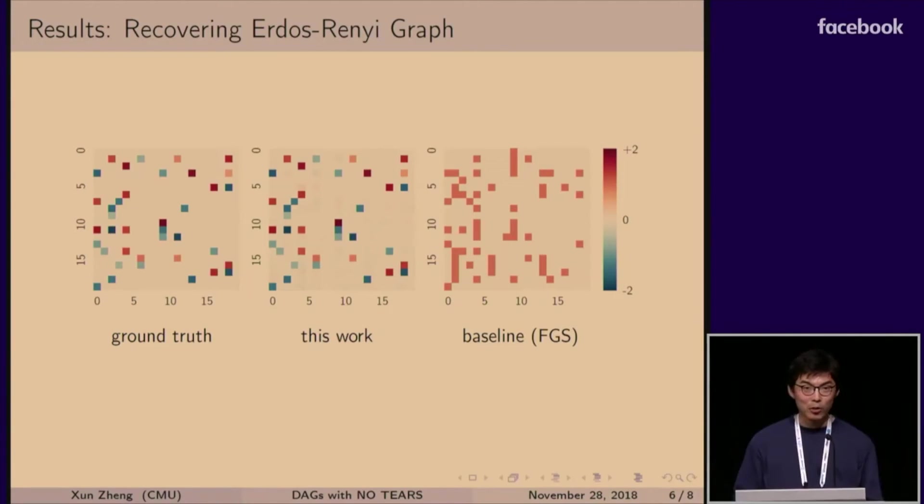So let's look at some results. In this task, we're given the ground truth, where we have the ground truth graph, and then we're drawing samples from this ground truth graph, and we're trying to recover the graph structure. So on the left, you are seeing the heat map of the adjacency matrix of the ground truth graph, and in the middle, we're seeing our estimate. And you can see it's very close to the ground truth. On the right, we're seeing one of the baseline methods called fast greedy equivalent search, and it doesn't do very well compared to us.